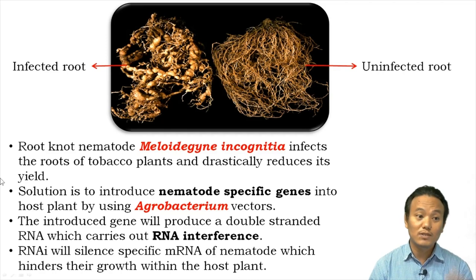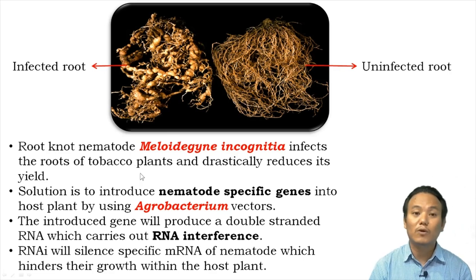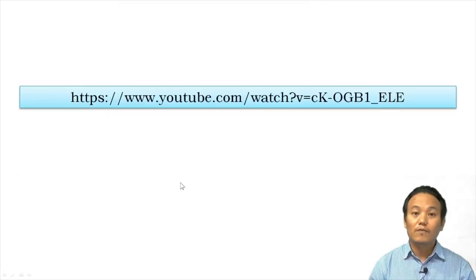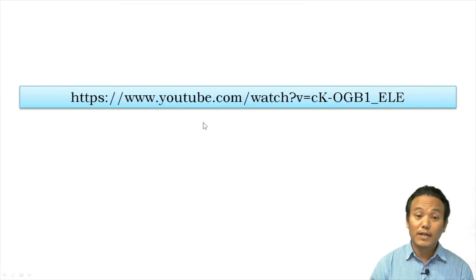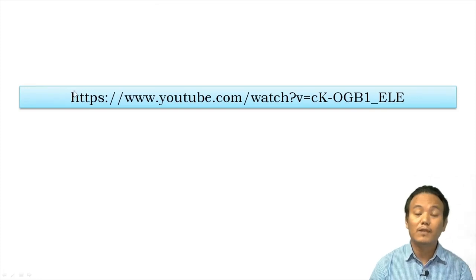That is the use of the RNA interference process in creating a nematode-resistant tobacco plant. If you're interested to know more about RNA interference, there is a YouTube link to a video that explains the process in detail.